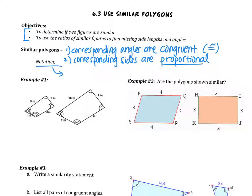For notation: congruent figures use the equal sign with the tilde, while similar figures use just the tilde.